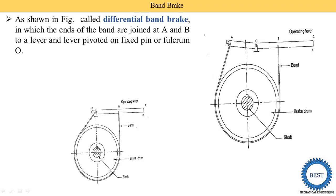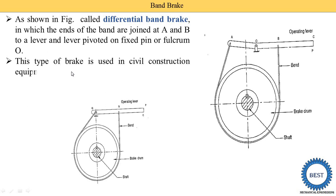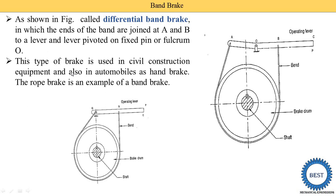But in the differential band brake, one end of the band is not attached with the fulcrum O. Instead, both ends of the band are joined at points A and B to a lever, and the lever is pivoted on a fixed pin or fulcrum O. One end of the band is attached at point A, the other end at point B, and the force is applied at the fulcrum point C. This type of brake is used in civil construction equipment and also in automobiles as a handbrake. The rope brake is also an example of a band brake.